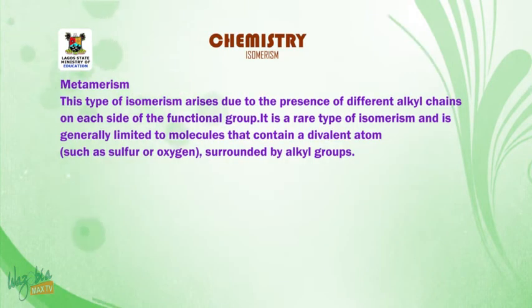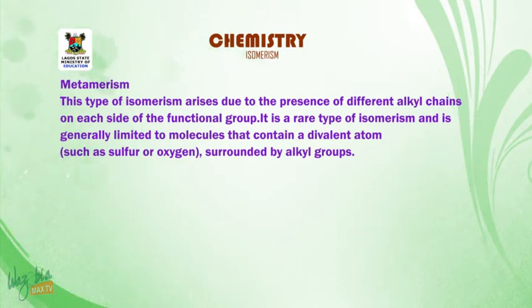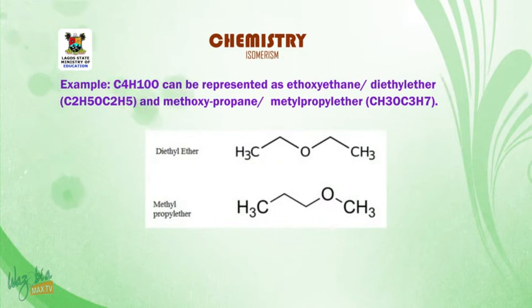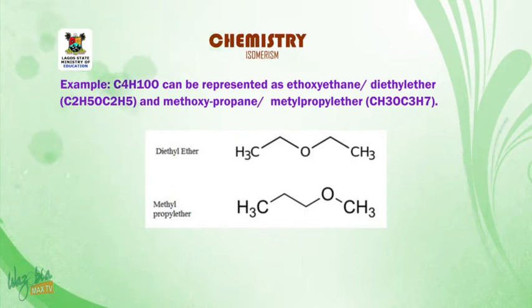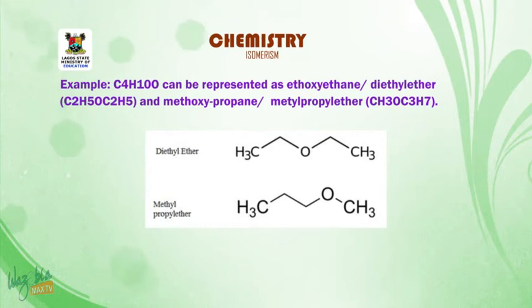Metamerism is a type of isomerism arising due to the presence of different alkyl chains on each side of the functional group. It is a rare type of isomerism, generally limited to molecules that contain a divalent atom such as sulfur or oxygen surrounded by alkyl groups. An example is found in C4H10O: diethyl ether (C2H5-O-C2H5), and we can also have methoxypropane, or methylpropyl ether (CH3-O-C3H7).